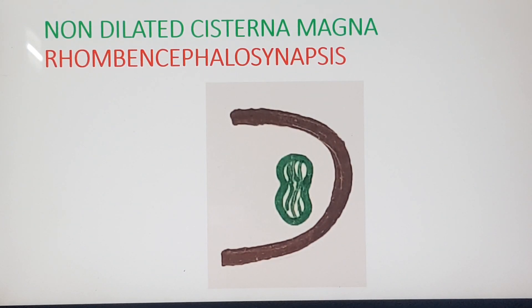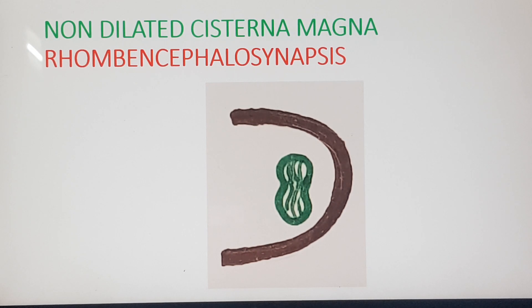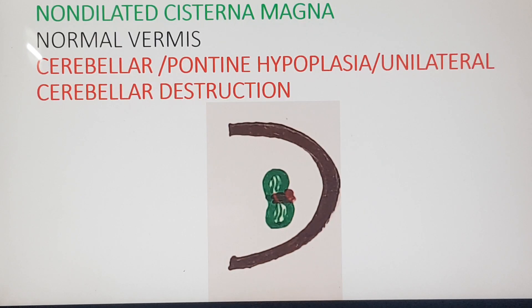Now we come to the other subset. There is no dilated cisterna magna. But look at the cerebellum — the vermis is not seen and the folia are communicating across the midline. This is rhombencephalosynapsis.